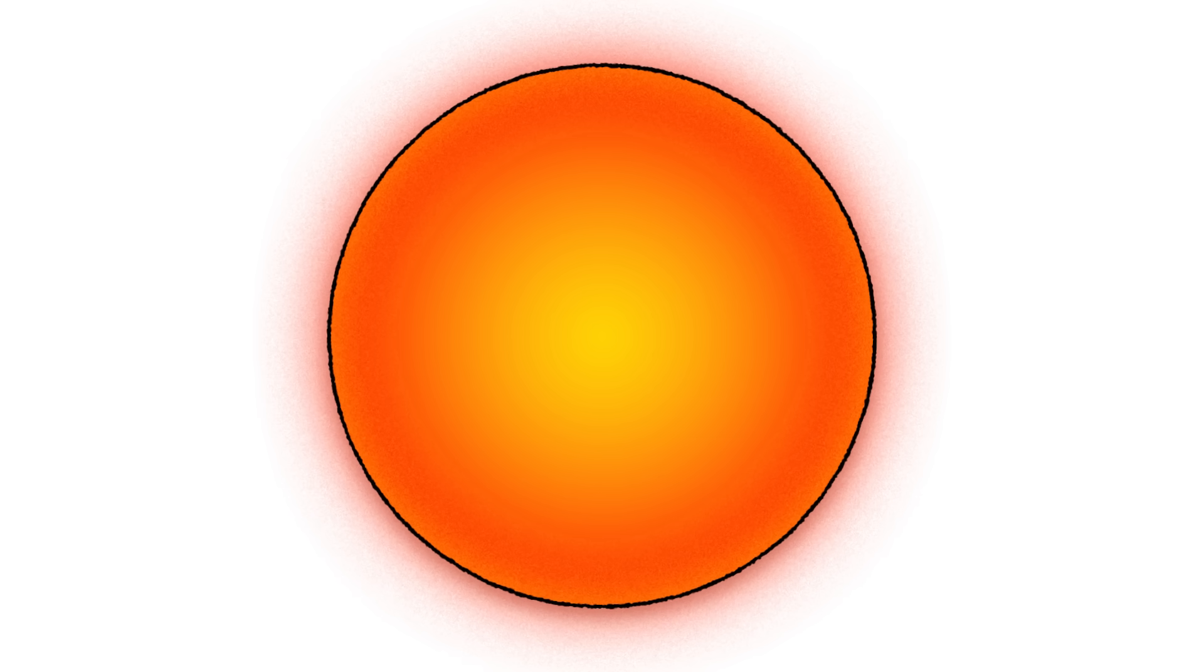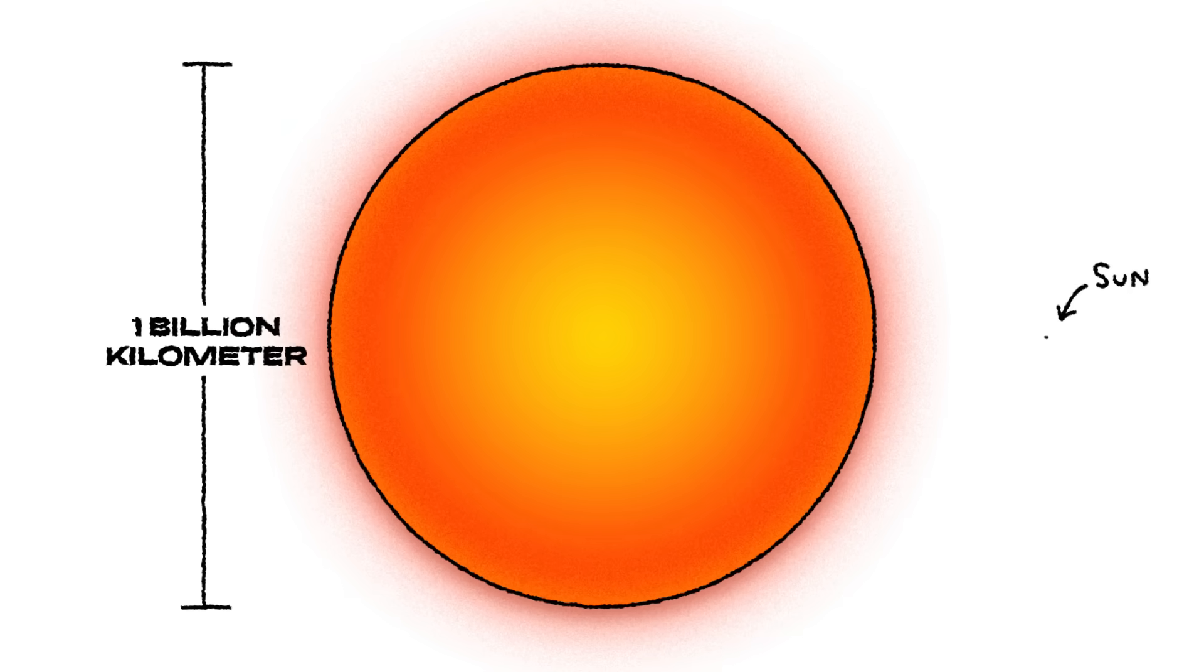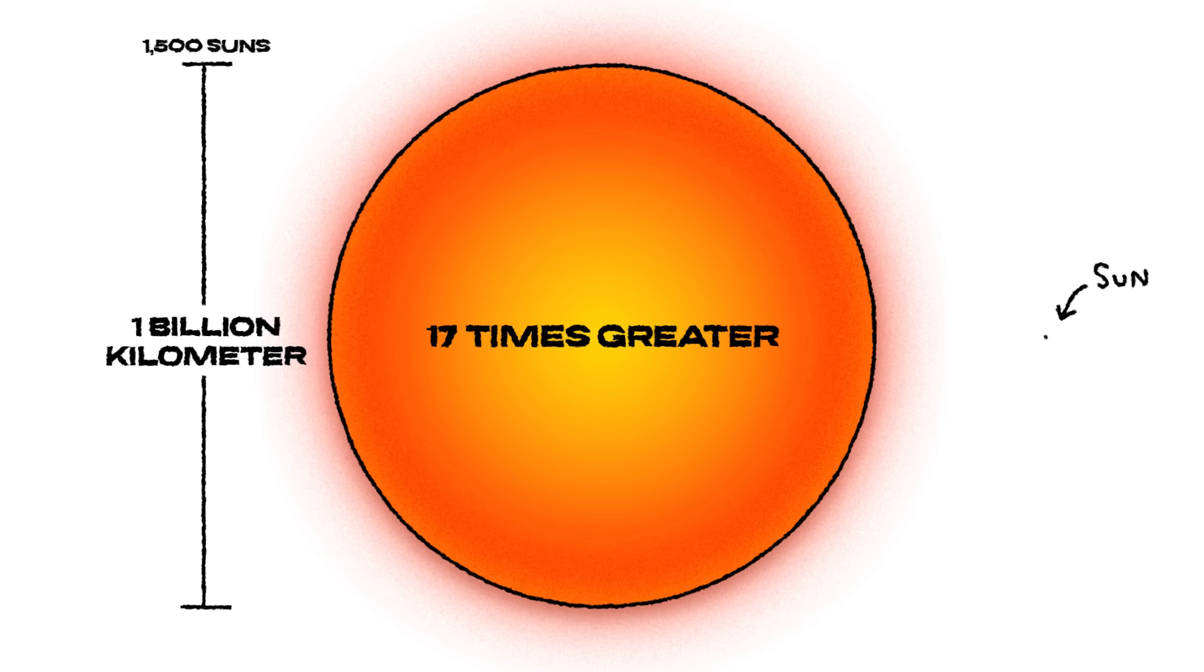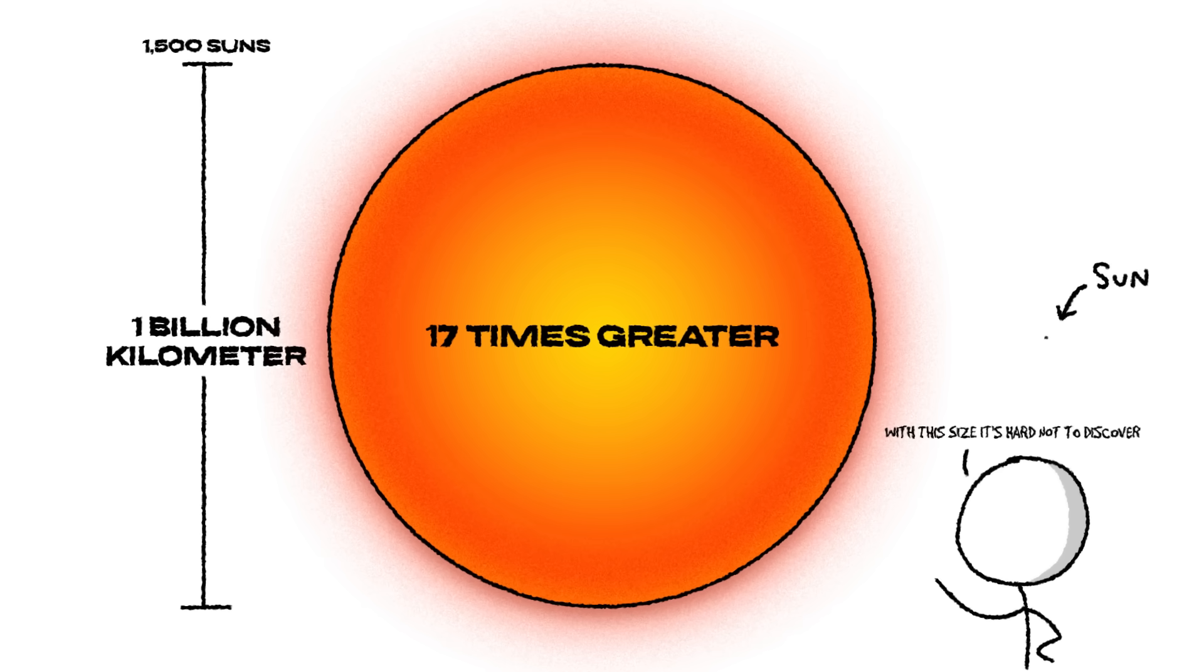Now let's end with the biggest star we know, V.Y. Canis Majoris. This hypergiant is so enormous that if we put it where the sun is, it would swallow everything up to Saturn. Its 1 billion kilometer radius makes it 1,500 times the size of our sun. And while its mass is only 17 times greater, its sheer volume makes it one of the largest stars ever discovered.